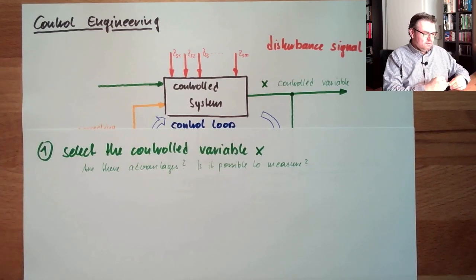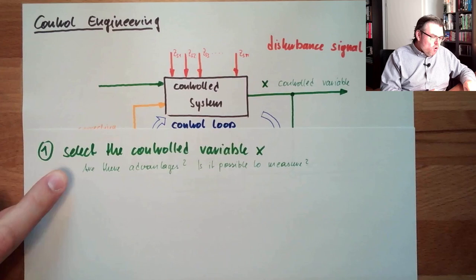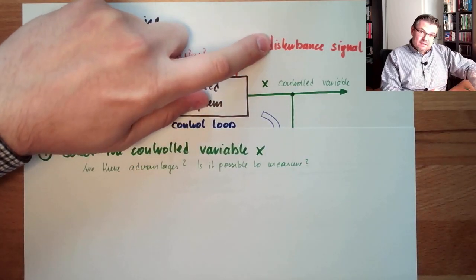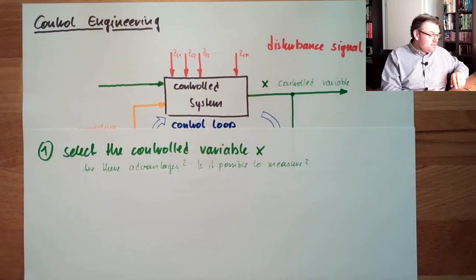So if I now have selected a controlled variable and I realized there are advantages and I can even measure it, I can place a measurement at a reasonable price, at a reasonable position inside my process or wherever, and I can determine the size, the quantity of my controlled variable. That's a starting point. The second thing: now that I know which controlled variable I have, I can think about the disturbances.